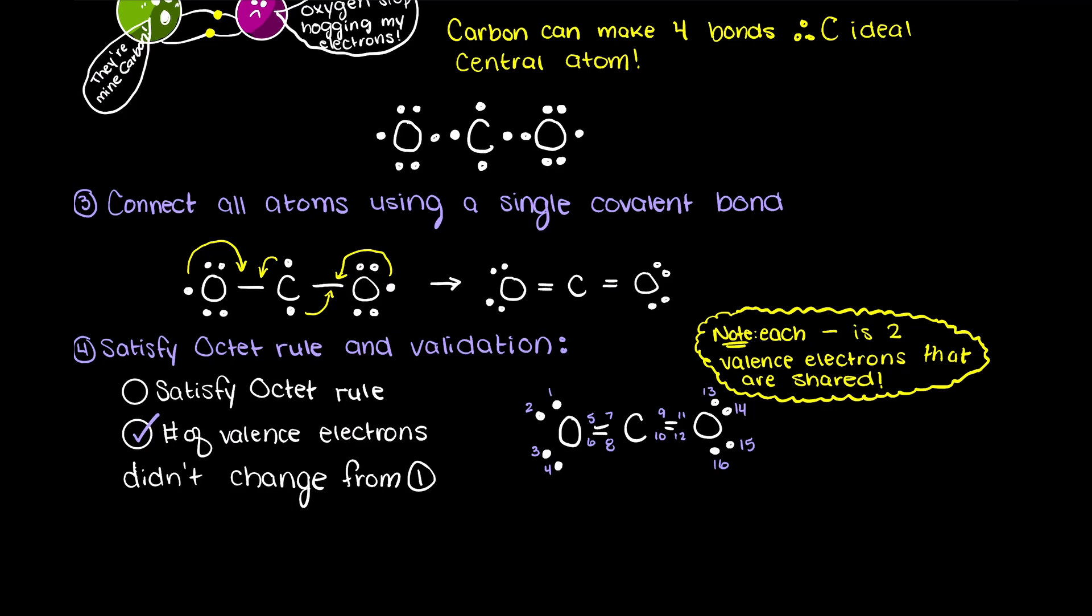Next, let's validate all atoms that need to obey the octet rule. This left oxygen has 4 electrons in our lone pairs, and it has 4 electrons shared with the central carbon. Therefore, it holds 8 valence electrons and obeys the octet rule. The central carbon shares 8 electrons with the bound oxygens and therefore also satisfies the octet rule. Lastly, this oxygen on the right is the same as the one on the left, and therefore satisfies the octet rule for the same reasons.